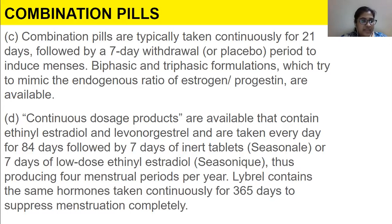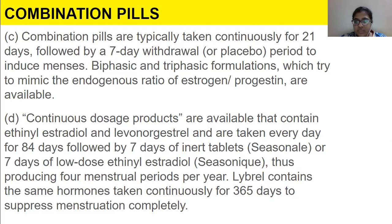Continuous dosage products are available that contain ethinyl estradiol and levonorgestrel and are taken every day for 84 days, followed by seven days of inert tablet or seven days of low-dose ethinyl estradiol, thus producing four menstrual periods per year. Lybrel contains the same hormones taken continuously for 365 days to suppress menstruation completely.